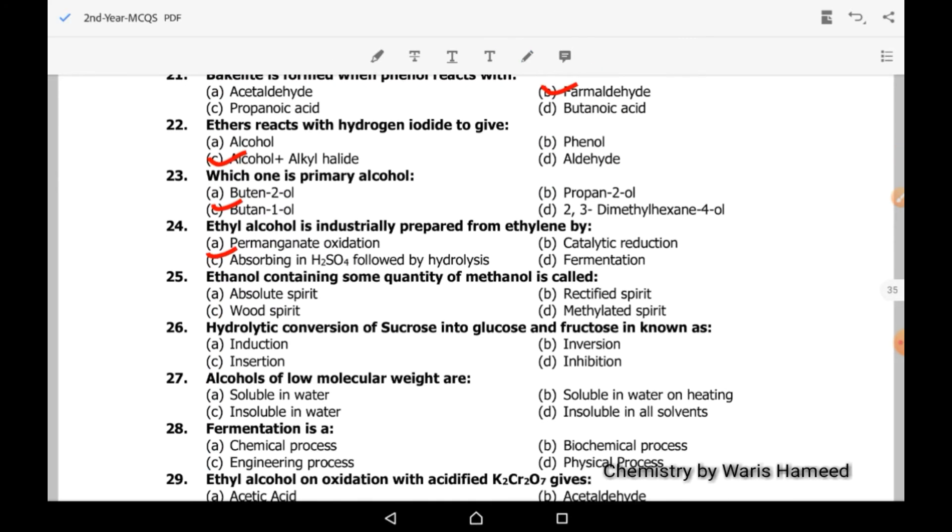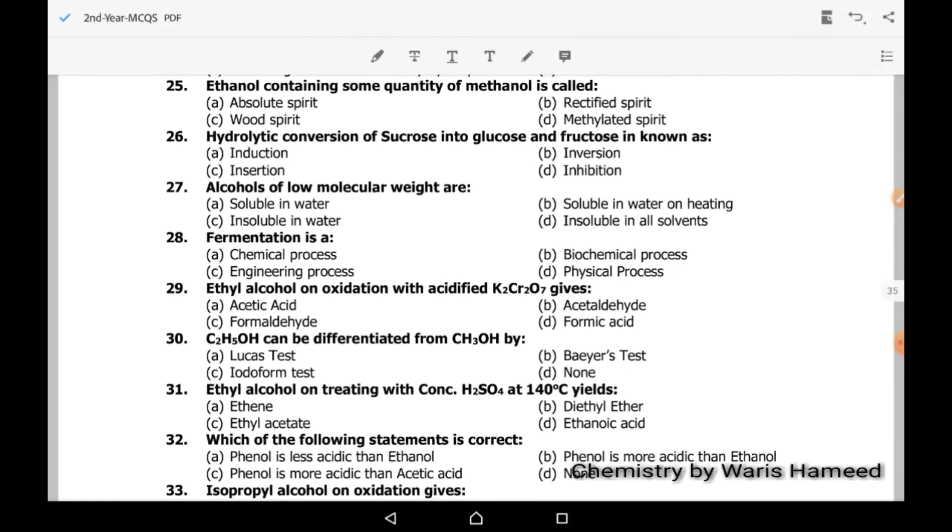MCQ 25: Ethanol containing some quantity of methanol is called methylated spirit. Hydrolytic conversion of sucrose into glucose and fructose is known as inversion. Alcohols of low molecular weight are more soluble in water.